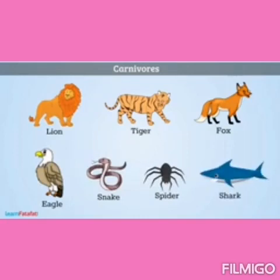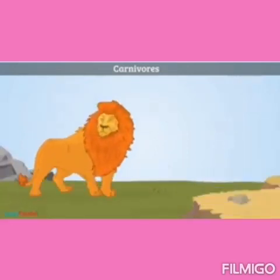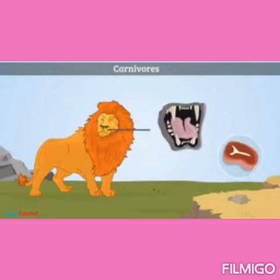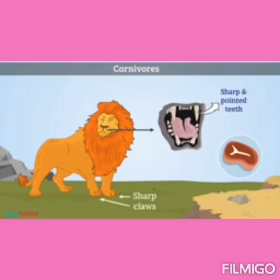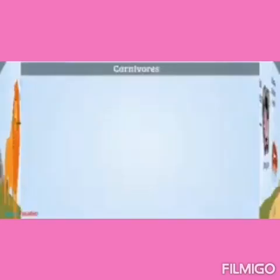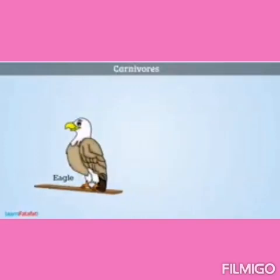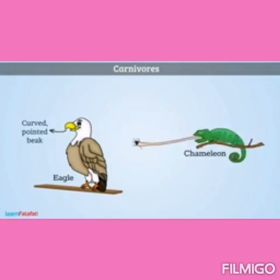For tearing flesh, carnivores have sharp and pointed teeth, sharp claws, and very strong jaws. They chew flesh with strong back teeth. Carnivore birds such as eagles have curved pointed beaks for tearing flesh. Some animals such as the chameleon catch insects with their long tongue.